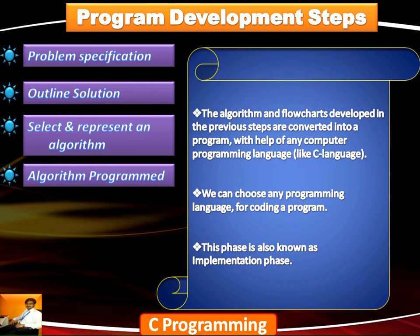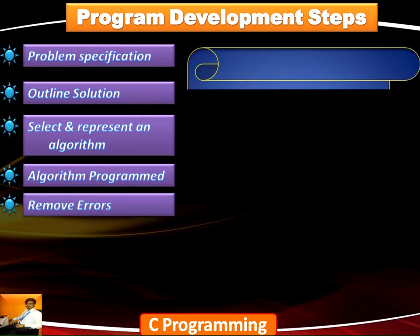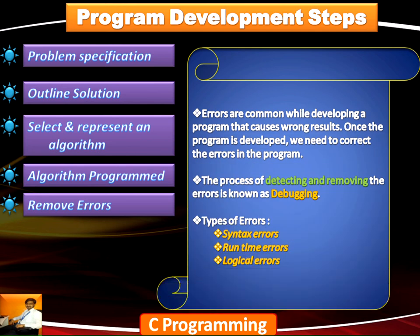Once the program has been implemented and coding is over, we come across certain errors. Errors are nothing but bugs, and we need to remove the bugs we encounter in the program. Errors are common while developing a program and cause wrong results. The process of detecting and removing errors is known as debugging. We come across three types of errors: syntax errors, runtime errors, and logical errors.